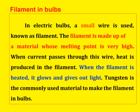Next, filament bulbs. In electric bulbs, a small wire known as the filament is used. The filament is made of a material whose melting point is very high. When the filament is heated, it glows and gives out light. Tungsten is the commonly used material to make the filament in bulbs. This is a very important objective type question.